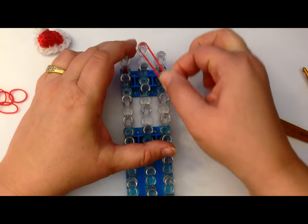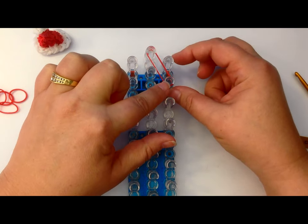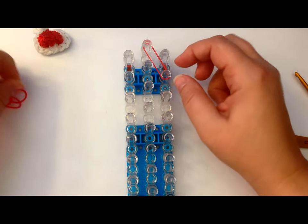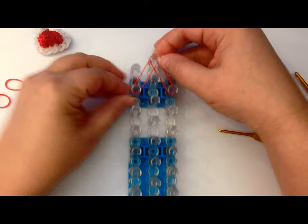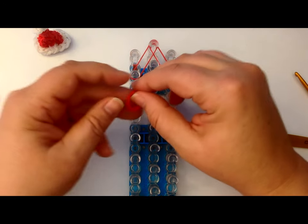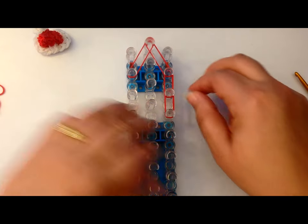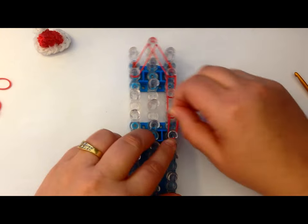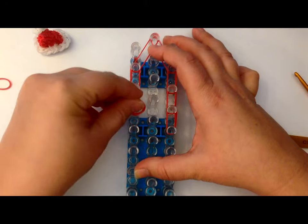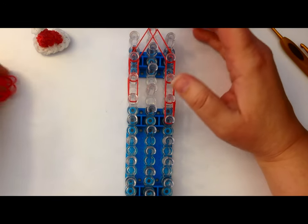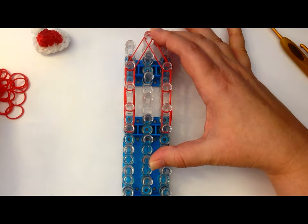We're going to take our first two bands and stretch them from the middle center peg down to the second peg on the right, and then do the same for the left. And then we're going to come down with three pairs on either side. Like that, and then down the center.